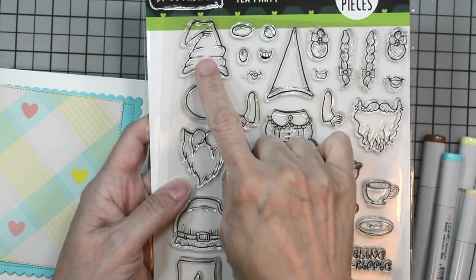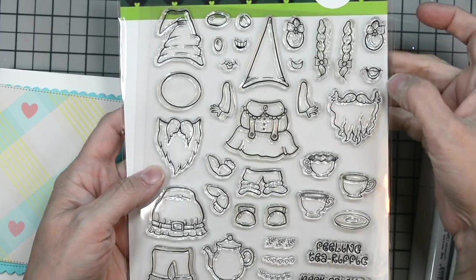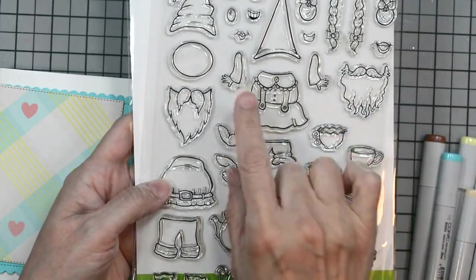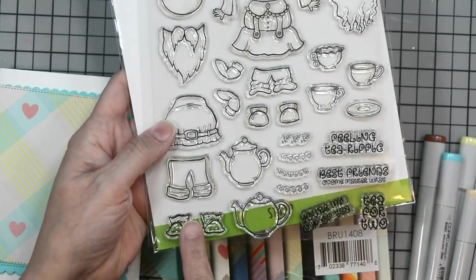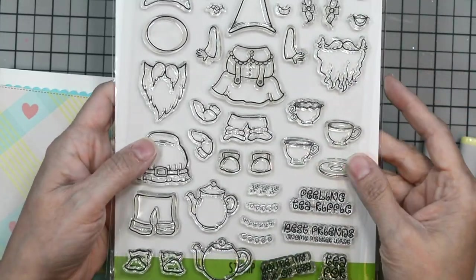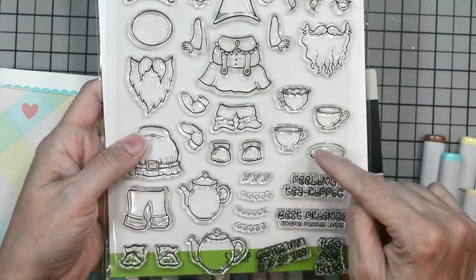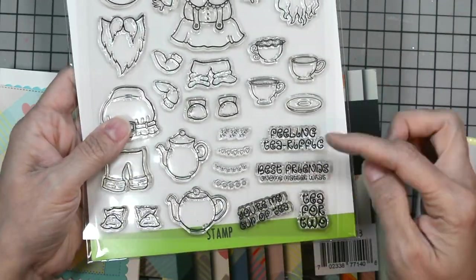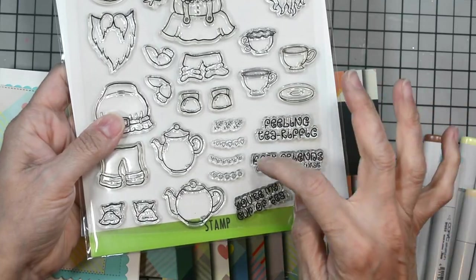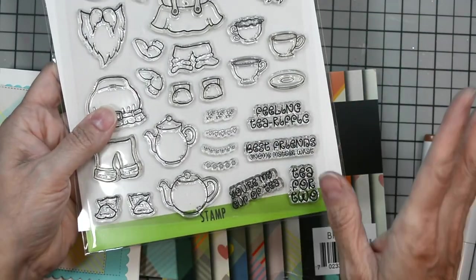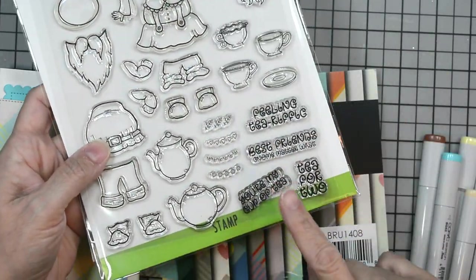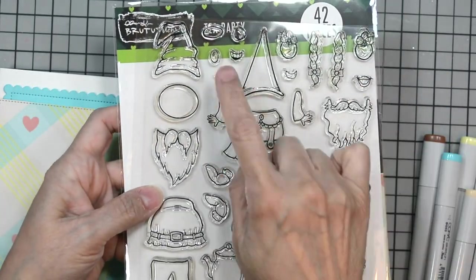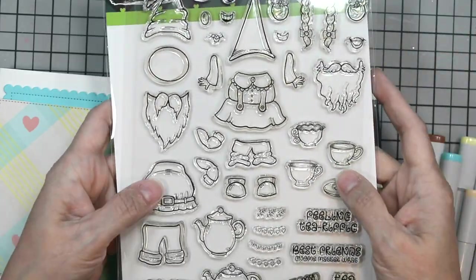It has several pieces to layer and create your own gnomes. It has several noses, mouths, hairstyles, beards, clothing, two types of arms, cups, a saucer, two teapots, and little decorations. You have sentiments like 'you're terrific,' 'you're the best,' 'gnomes no matter what,' 'you're my cup of tea' which we'll be using today, and 'tea for two.'